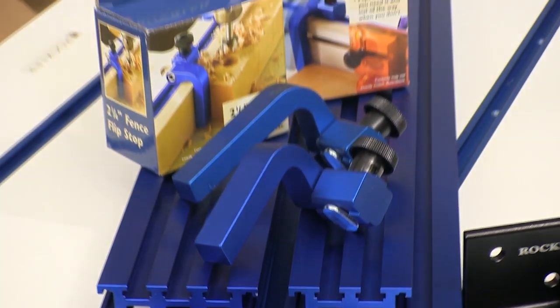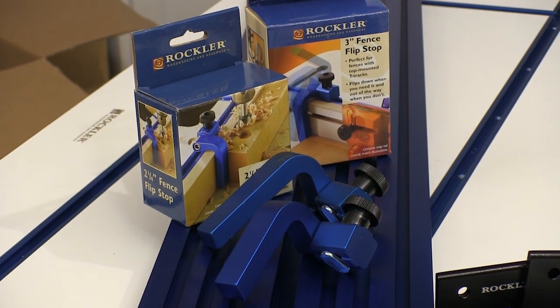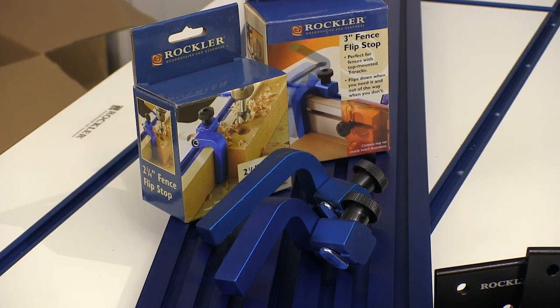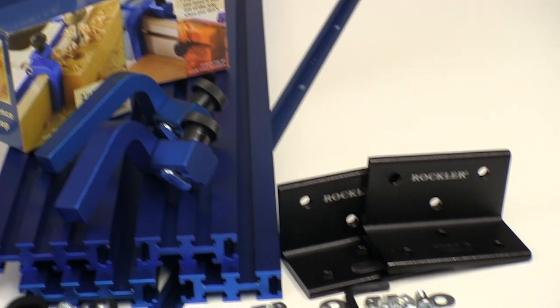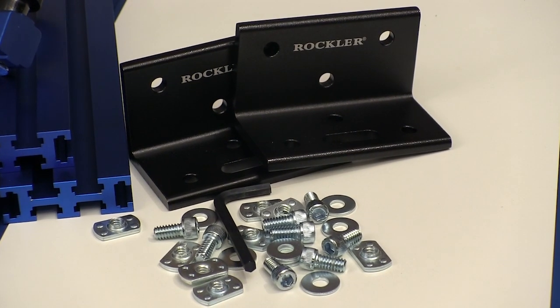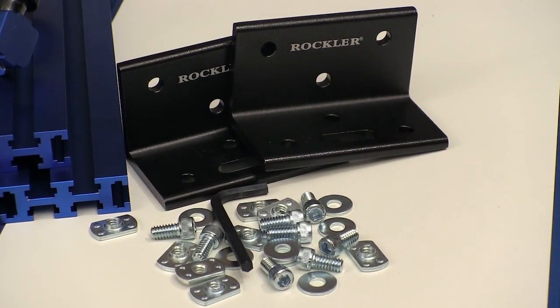Another thing we can use this table for is for assembly or making jigs or fixtures. And for that, Rocker offers these multi-tracks and flip stops. And Rocker also has these angle brackets that let you put the multi-track anywhere you want in just about any configuration.